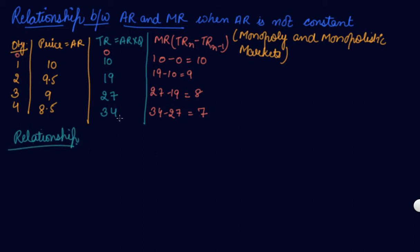Now let us see the relationship in the case when your AR is not constant but declining. Your MR is also declining. Here your AR is declining — your price is going down — and your MR is also going down. So this is the positive relationship between AR and MR.